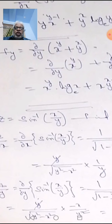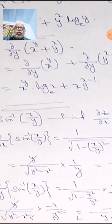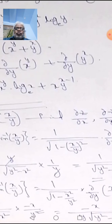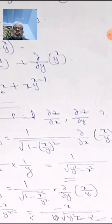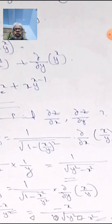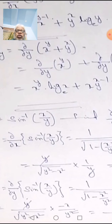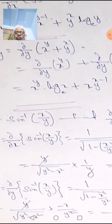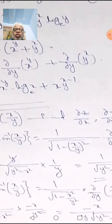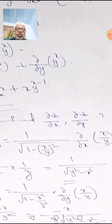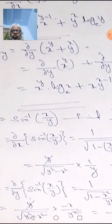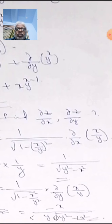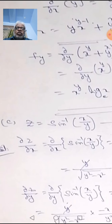For dou z/dou y: dou/dou y of sin⁻¹(x/y) gives 1/√(1-(x/y)²) times dou/dou y of (x/y). Simplifying the first part gives y/√(y²-x²). The derivative of x/y with respect to y is -x/y². The y² cancels, and finally we get dou z/dou y equals -x / (y·√(y²-x²)).